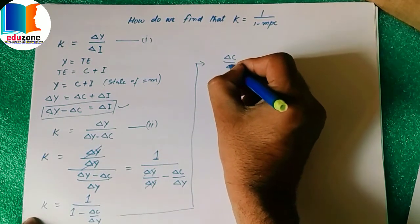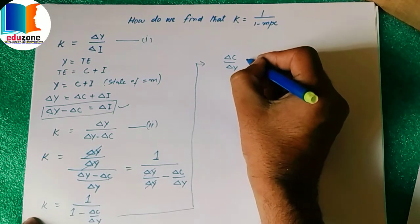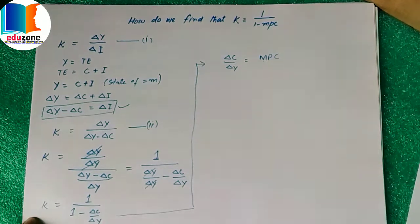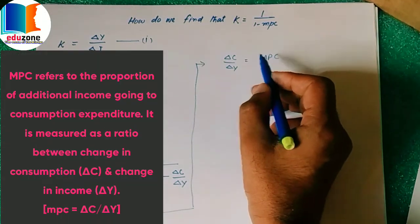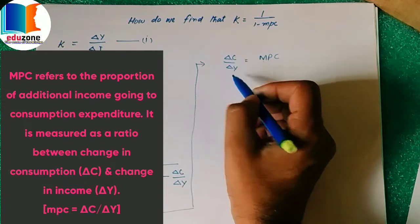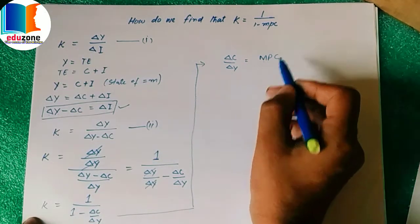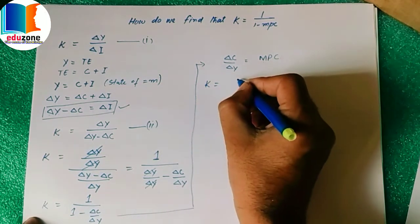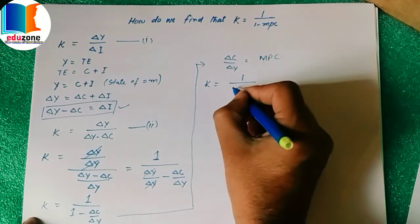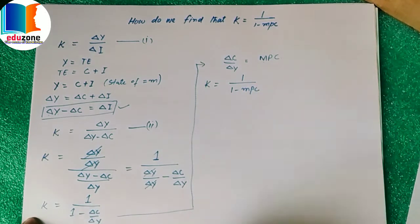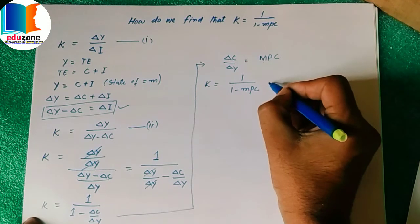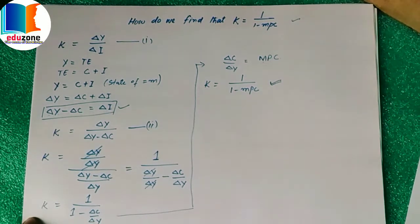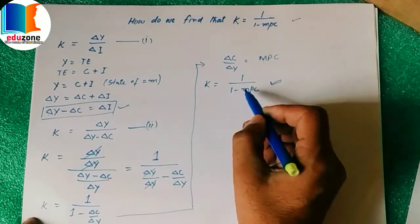Here, ΔC/ΔY equals MPC, that is, the marginal propensity to consume. We know that marginal propensity to consume equals change in consumption due to change in income. Substituting this value, our equation becomes K = 1 / (1 − MPC). This is the required equation we wanted to find. Hence, multiplier equals 1 divided by 1 minus MPC.